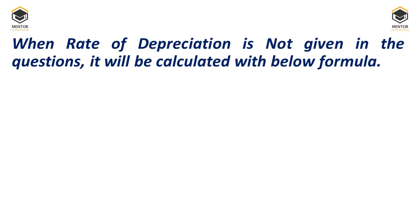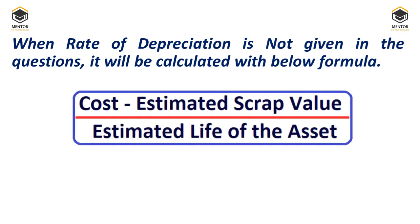When the rate of depreciation is not given, we use the formula. Most questions provide the rate of depreciation, but if it is not given, we apply: cost minus estimated scrap value, divided by estimated life. The cost of the asset means all expenditure incurred to make the asset usable — transportation, installation, and actual purchase price all form part of cost.